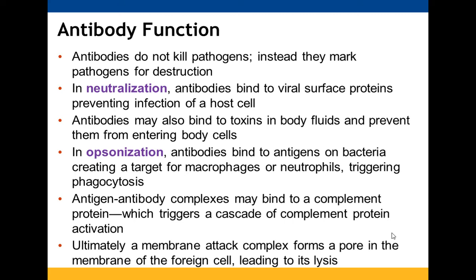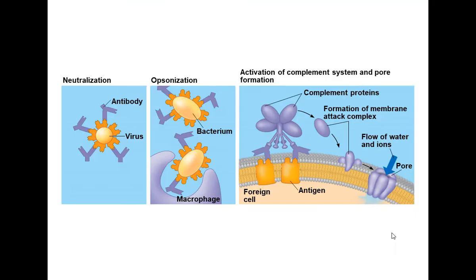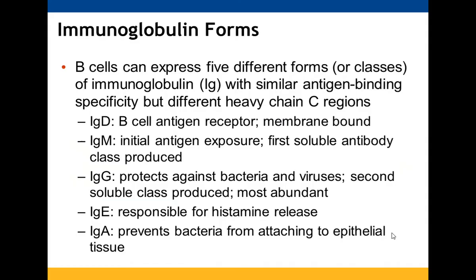Antibodies don't kill pathogens directly — they mark them for destruction. Neutralization occurs when antibodies bind to viral surface proteins or toxins, preventing them from entering host cells. Opsonization targets bacterial antigens, making them recognizable for macrophage or neutrophil phagocytosis. Antigen-antibody complexes can also bind complement proteins, triggering a cascade that opens pores in the pathogen, allowing water to flow in and lyse the cell.